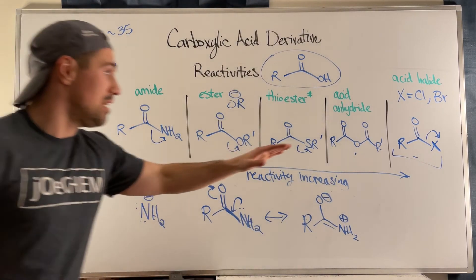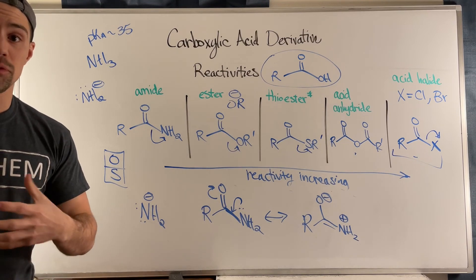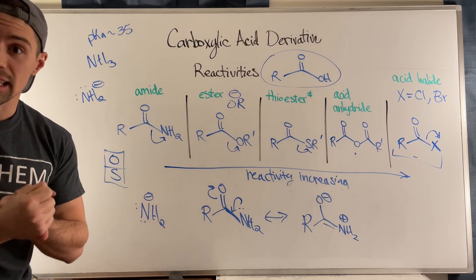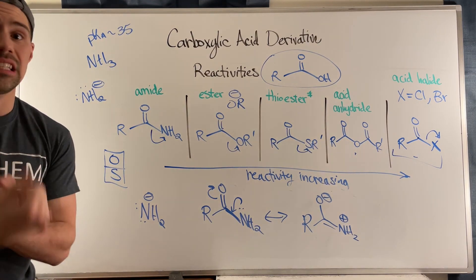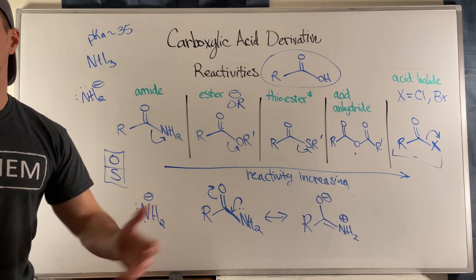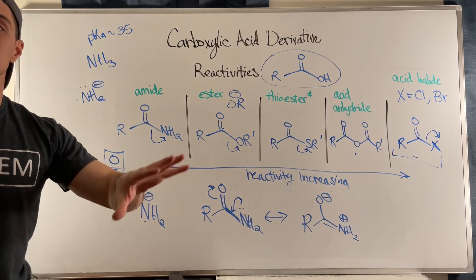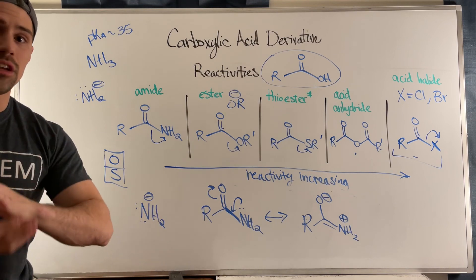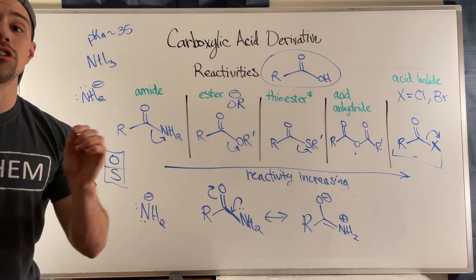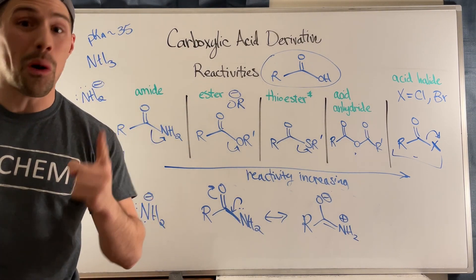Thank you for following me from most reactive to least reactive. I hope that if carboxylic acid derivative reactivity was confusing you, knowing what to look for — how electrophilic the carbonyl carbon is and the quality of the leaving group present — helps you with ranking problems and concept explanation problems. If you're new to Jochem and just wading into carboxylic acid derivative land, check out some more videos. I have videos spanning Ochem 1 and Ochem 2. Check out the website jochem.io — there are associated worksheets and solutions, completely free. I hope to see you all in the next video.